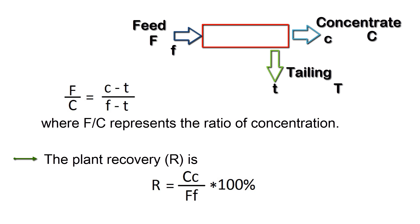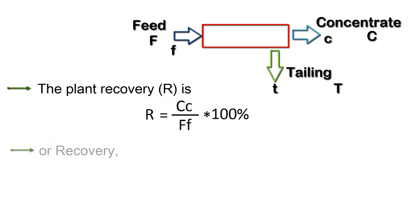The plant recovery, R, is equal to C into c by F into f, multiply by 100. Recovery is expressed in percentage, recoveries of the valuable metal.